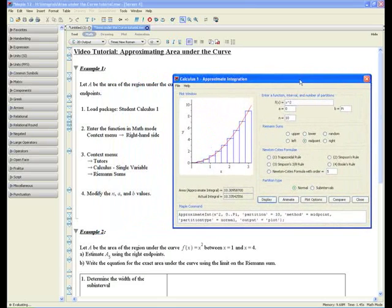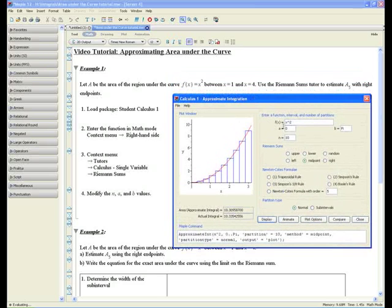This is the Riemann sums tutor. Step 4: Modify the N, A and B values. Because Maple automatically graphs a function using default values, we're given that the graph begins from x equals 1 to x equals 4. In other words, it begins from A equals 1 to B equals 4. We're supposed to use 5 rectangles to approximate the area under the curve. So let's change N equals to 5.